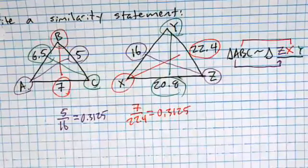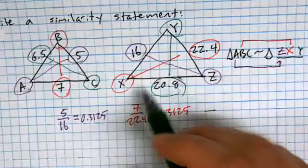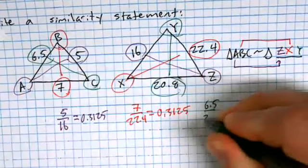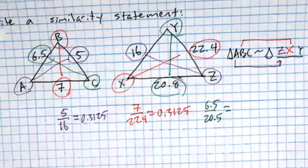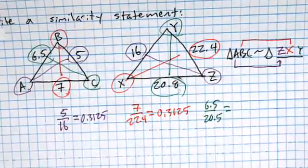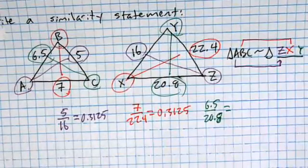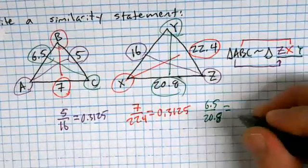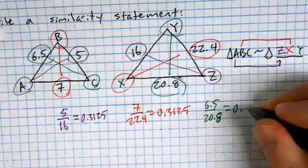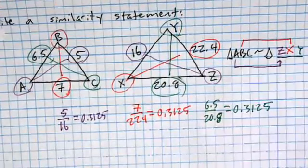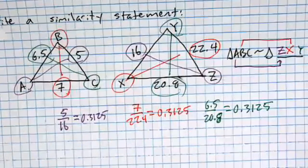C was across from 6.5, which matched up with 20.8 — wait, 20.5. So 6.5 over 20.5 — let's check if that's also 0.3125. Confirmed: it is. What we've just shown is that the sides are in proportion.